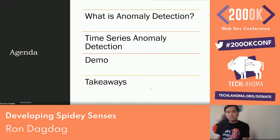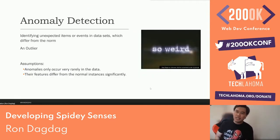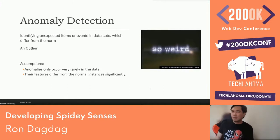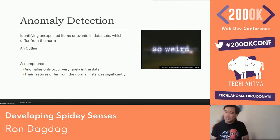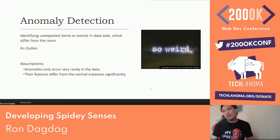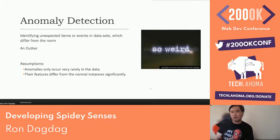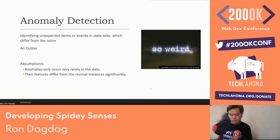Today we're going to talk about anomaly detection — it's like Spidey senses. We'll discuss time series anomaly detection and do a demo. Anomaly detection is identifying unexpected items in your data set that are different from the norm; sometimes we call it an outlier. The assumptions are that anomalies occur very rarely in your data and their features differ from normal instances significantly.